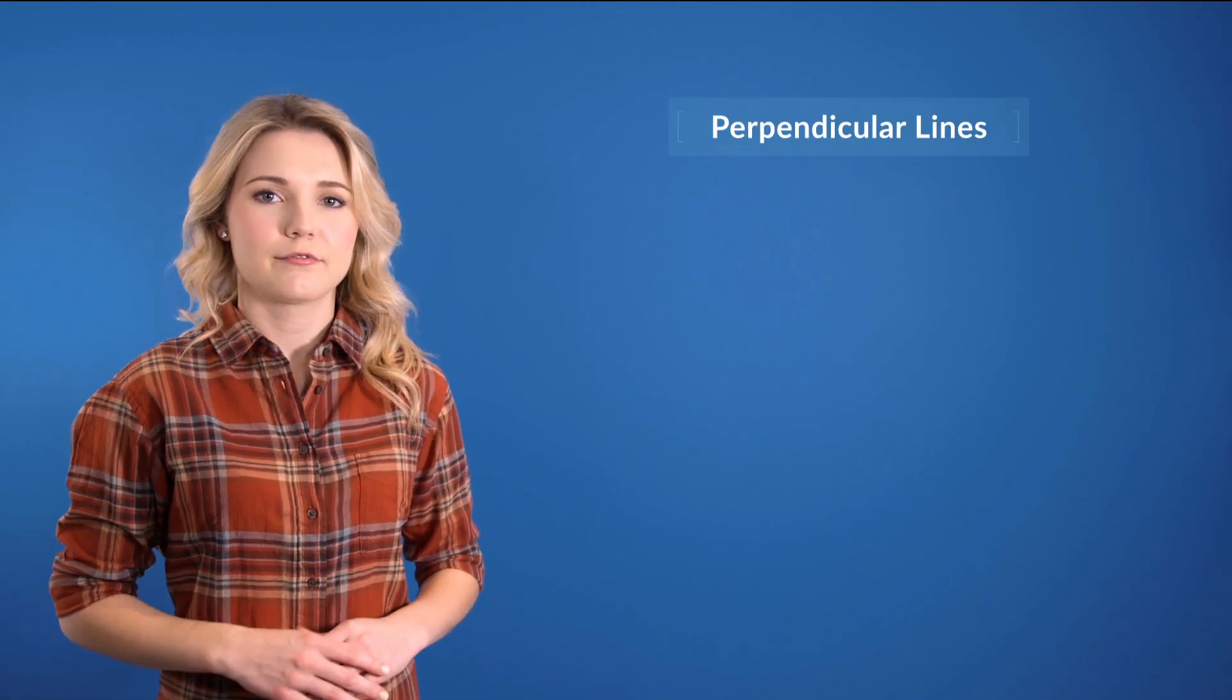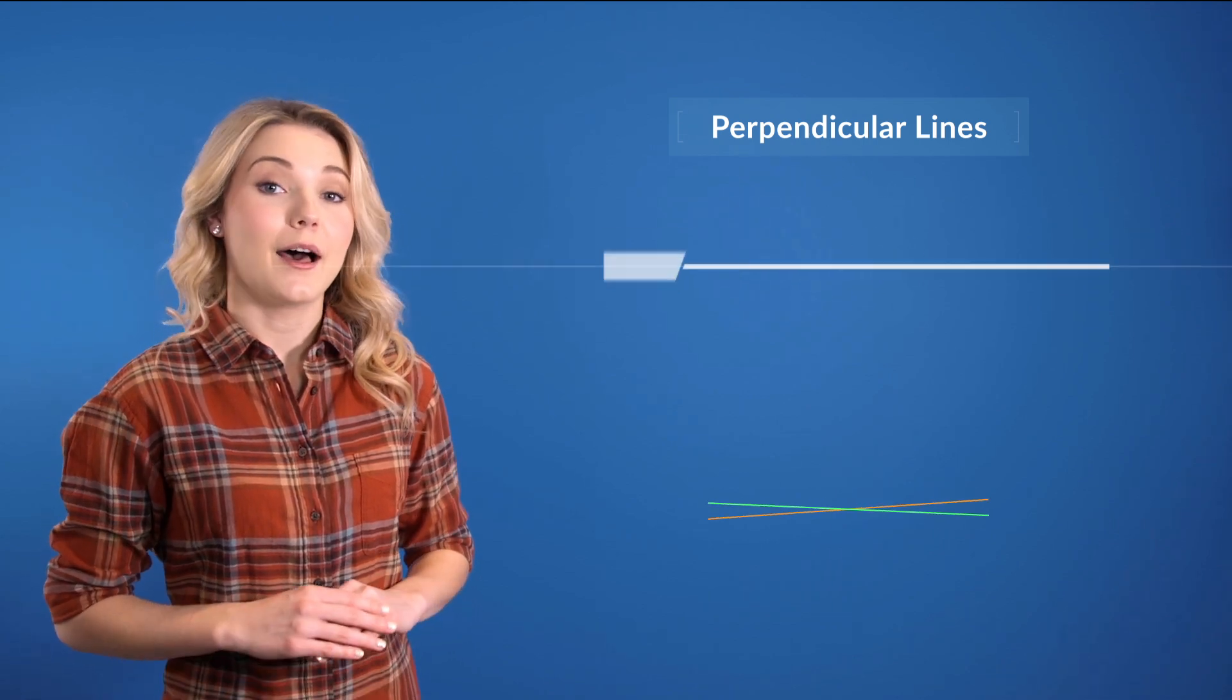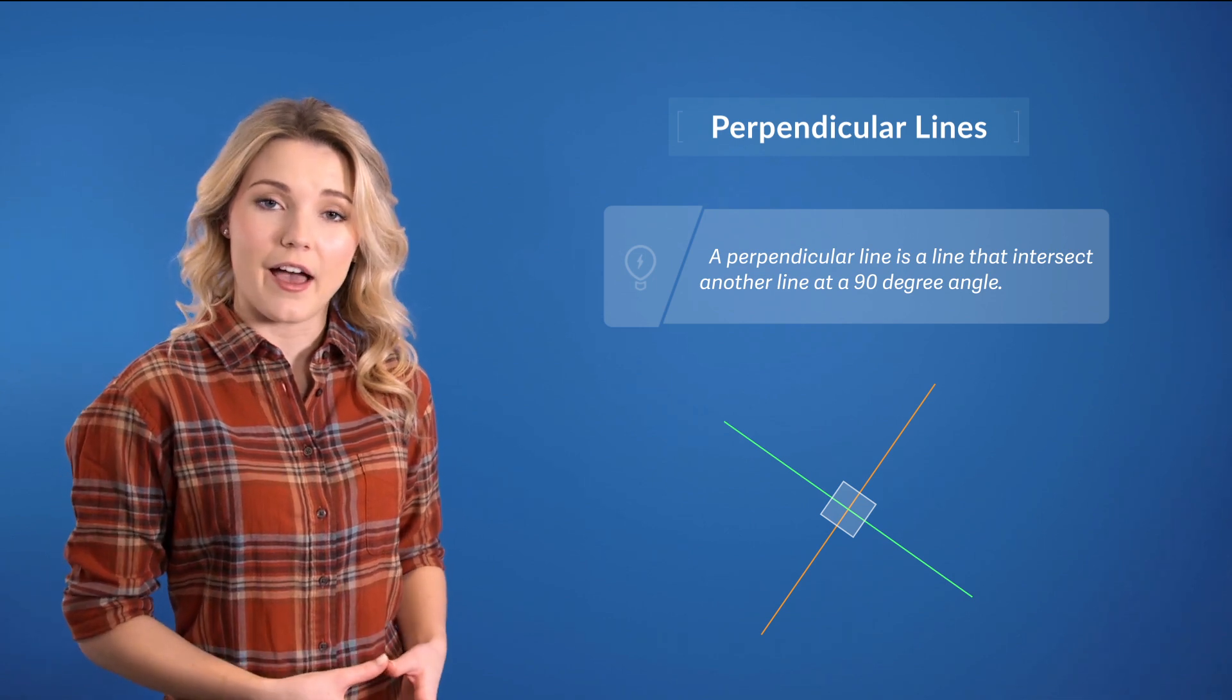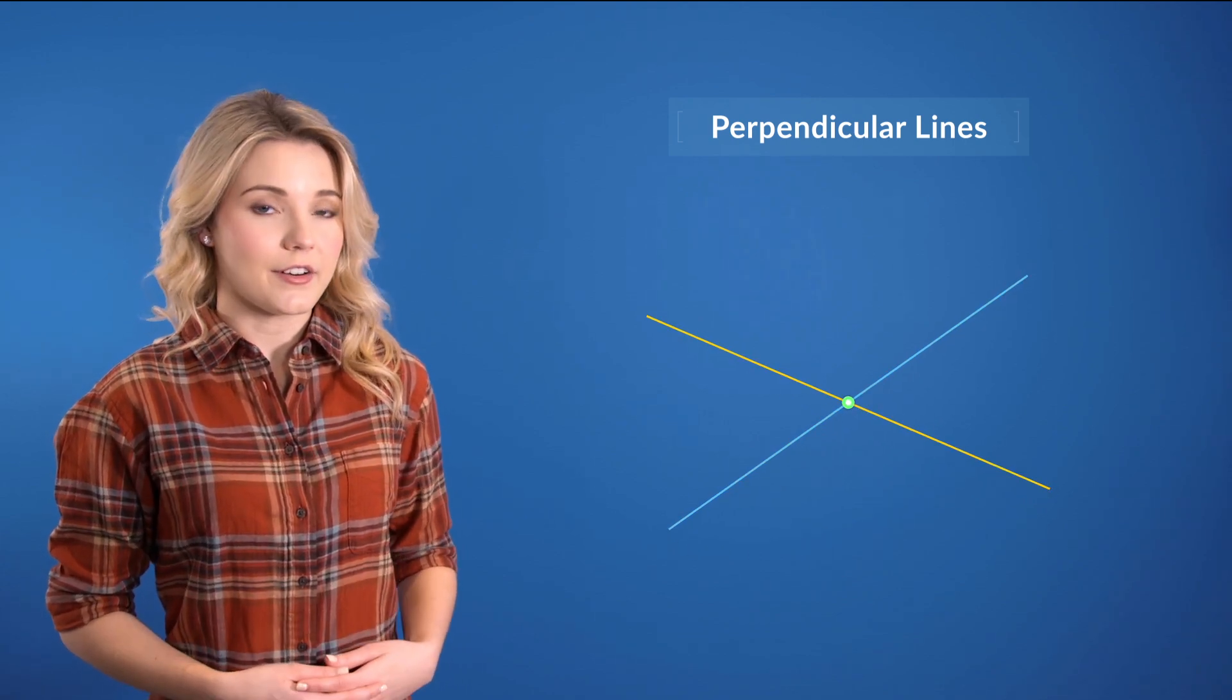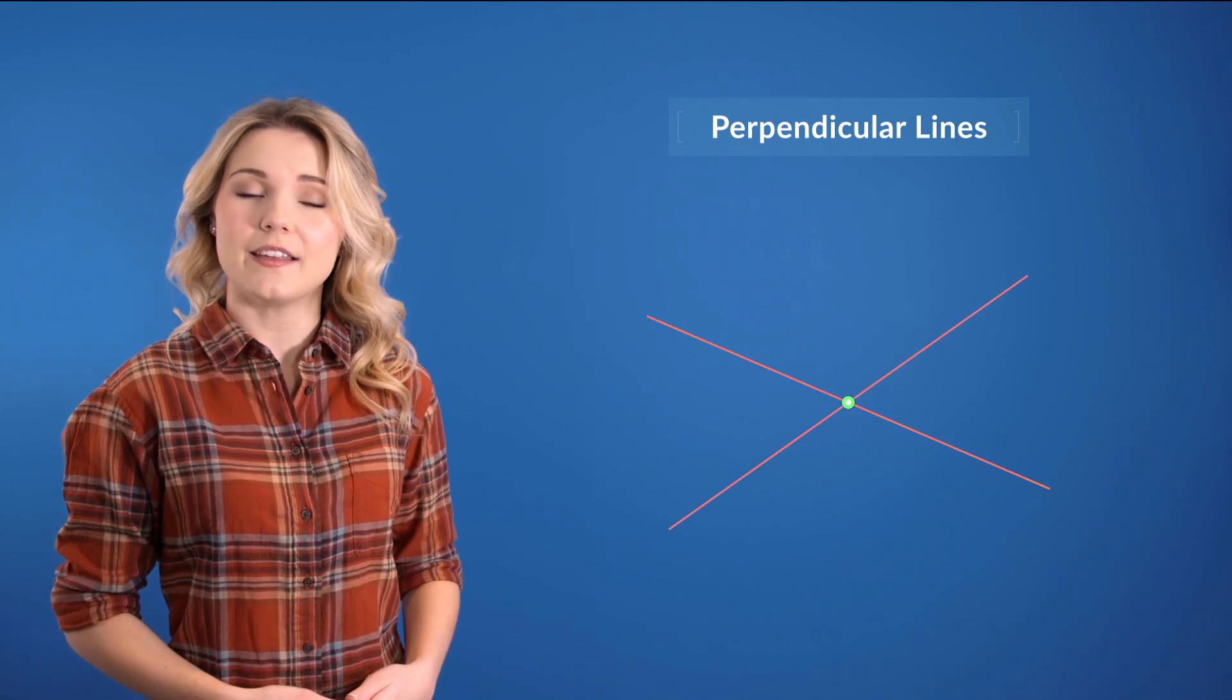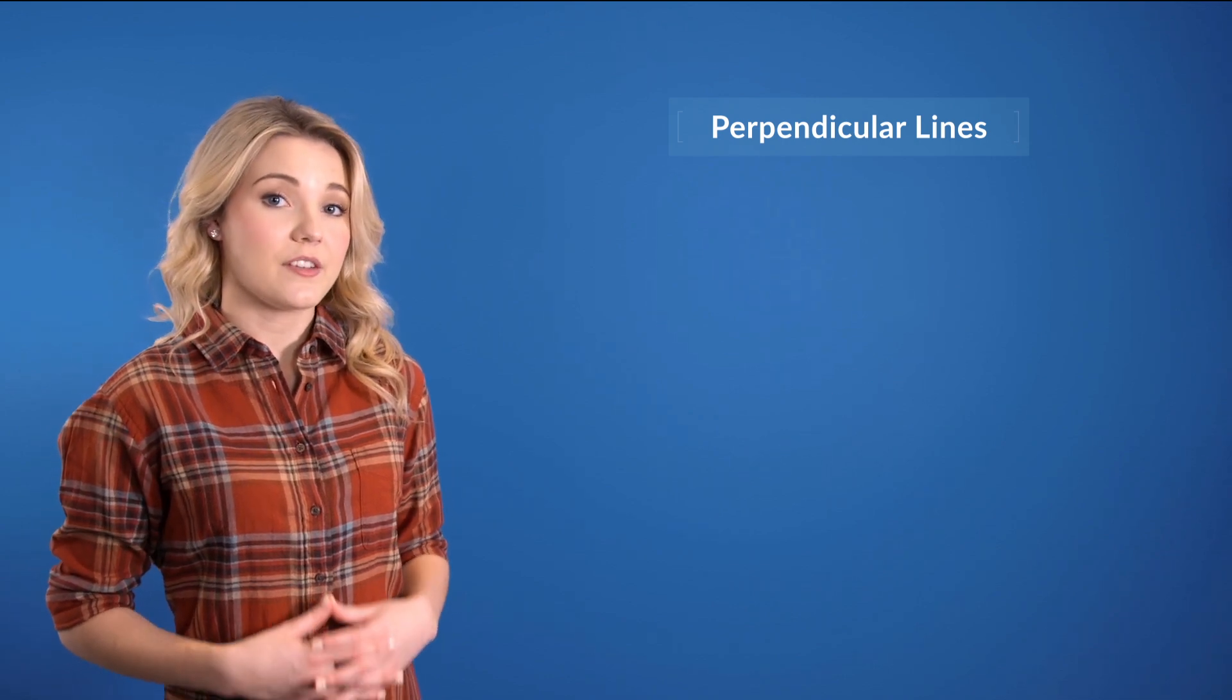Awesome! Now, what about the slopes of perpendicular lines? First of all, what's a perpendicular line? Well, a perpendicular line is a line that intersects another line at a 90-degree angle. So these lines, although they do intersect, do not intersect at a 90-degree angle, and thus, they would not be perpendicular.